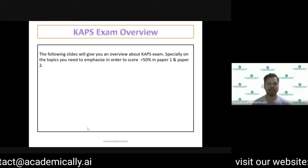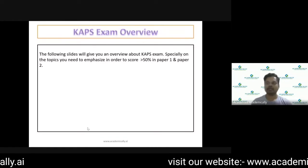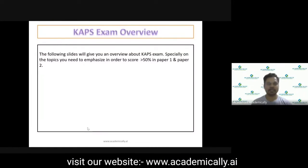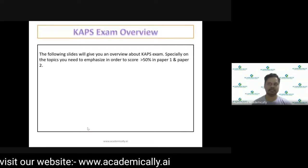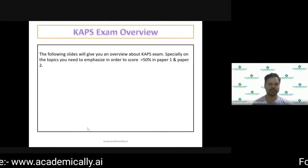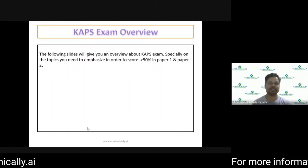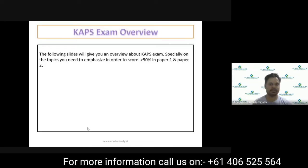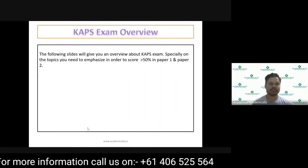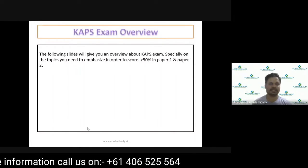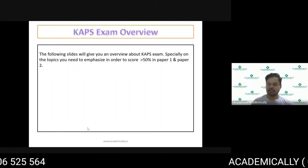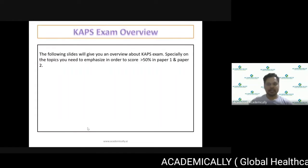For instance, if a candidate has passed Paper 1 but has failed Paper 2 — that is, unable to score 50% in Paper 2 — then the candidate needs to resit Paper 2 again in order to get the CAPS skills assessment letter from the Australian Pharmacy Council.